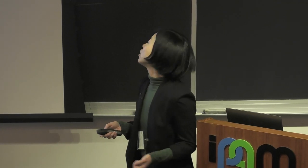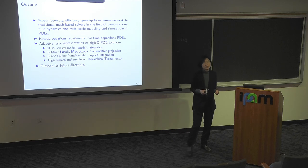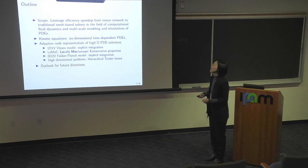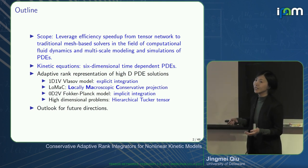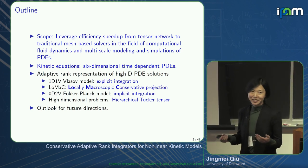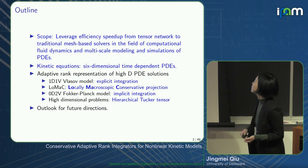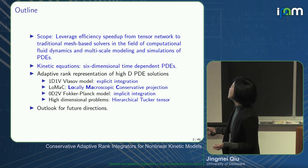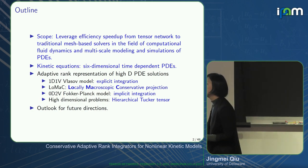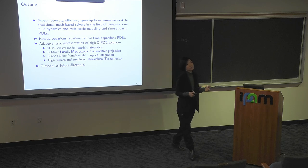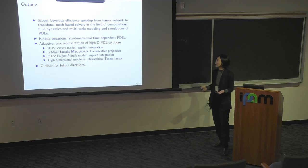The scope of my talk is to leverage the efficiency speedup from the tensor network representation to speed up the traditional mesh-based PDE solvers, in particular for kinetic simulations. The kinetic equations we consider are six-dimensional plus time, which is considered high-dimensional from my community. We are trying to develop adaptive rank representations for the high-dimensional PDE solutions. I'll explain ideas in a matrix setting, then extend to high-dimensional problems using hierarchical representations.